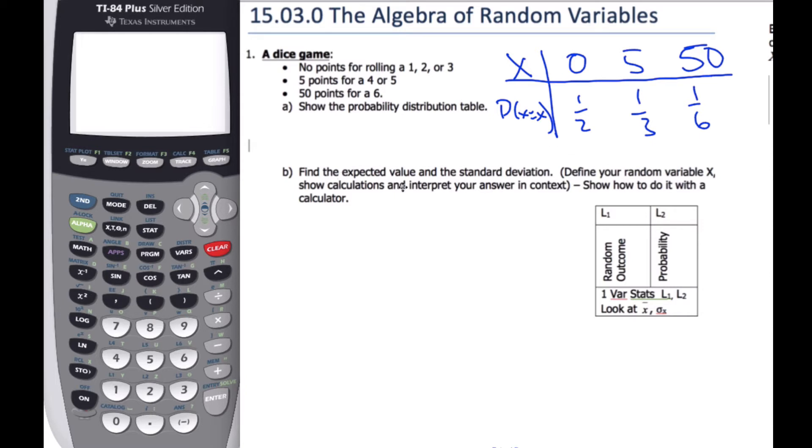If I want to find the expected value and the standard deviation, well, we need to then do the calculation. In our formula booklet, we can see there's lots of different formulas all called the same thing, and you have to pick the right one. So this is for a discrete random variable.